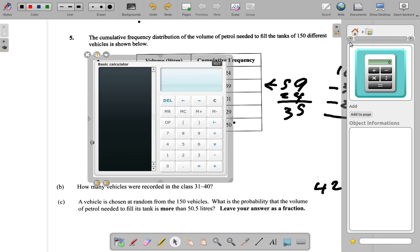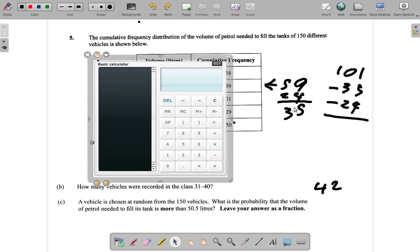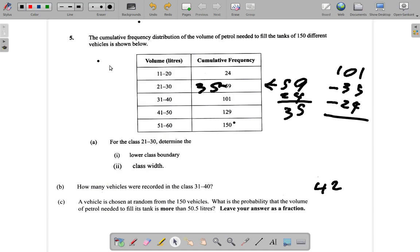That 101 minus the 35, and then you also take away 24 from it, and you get your 42.